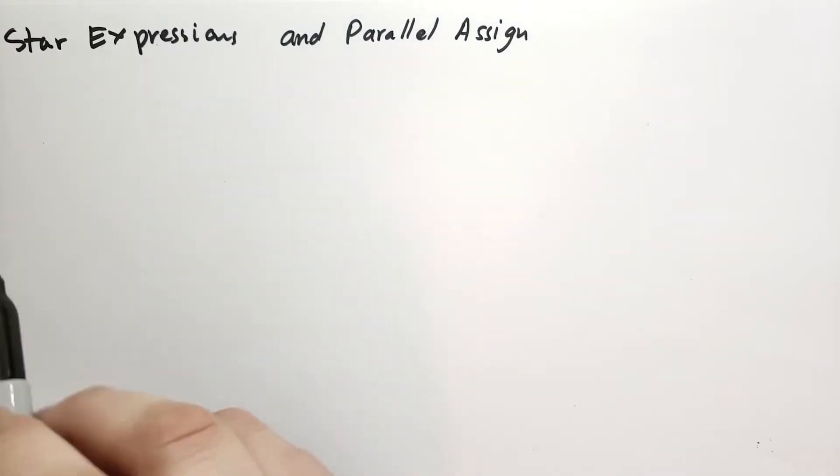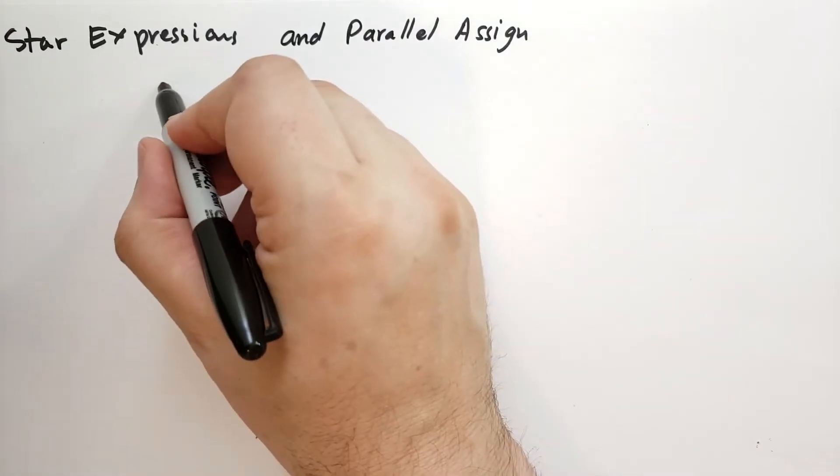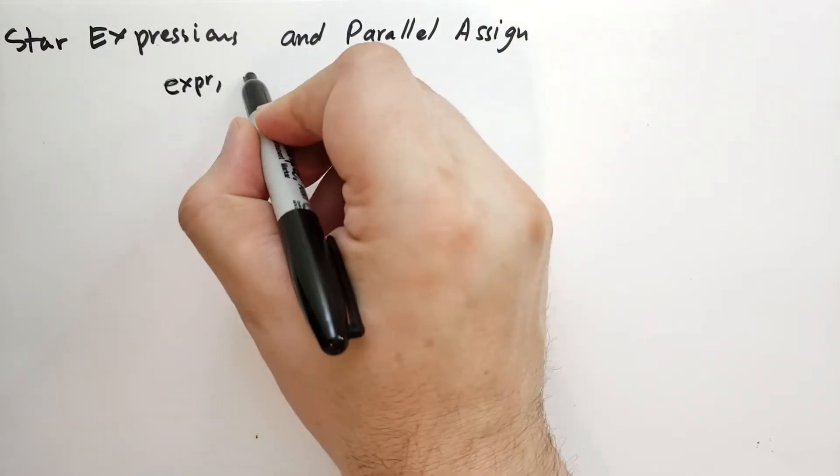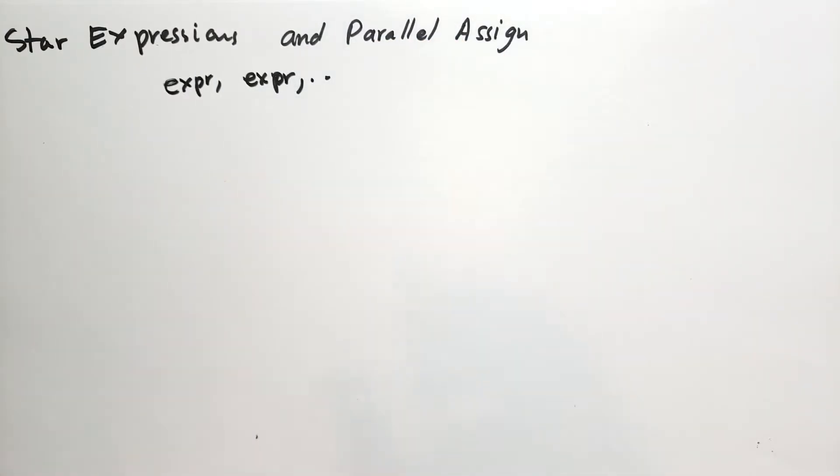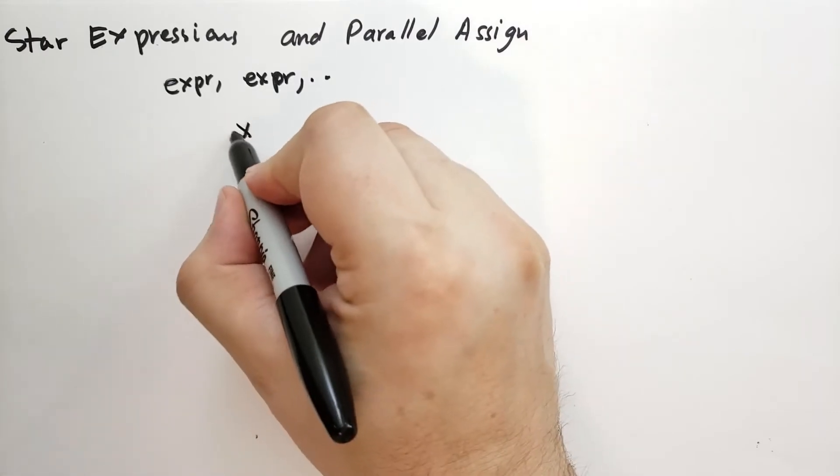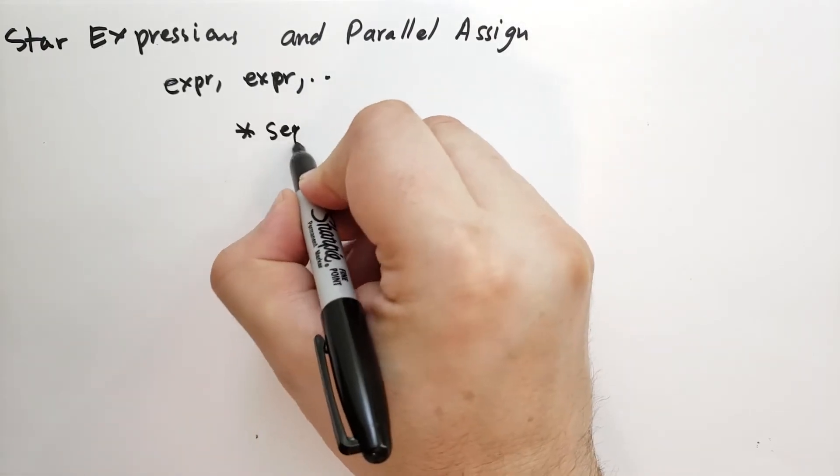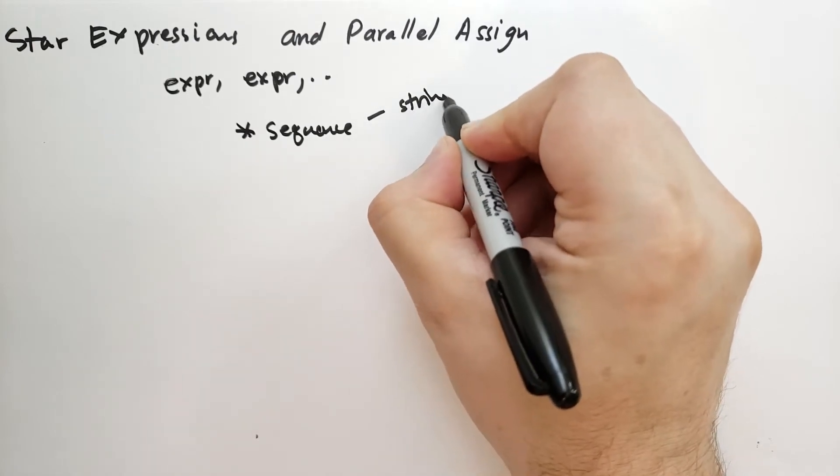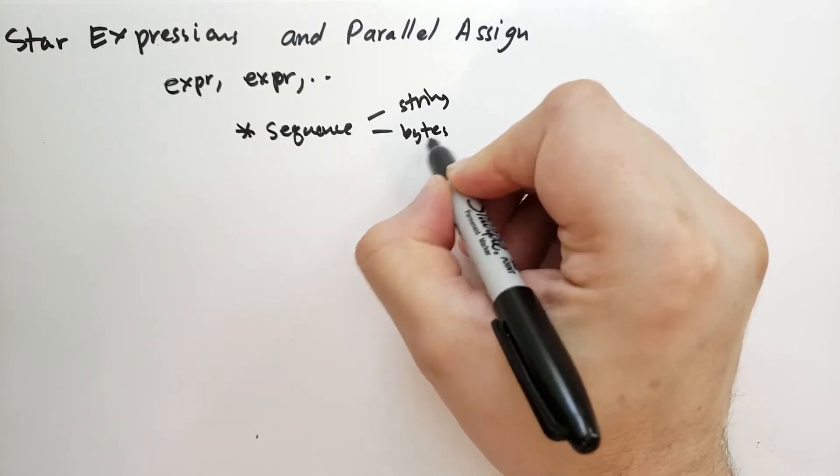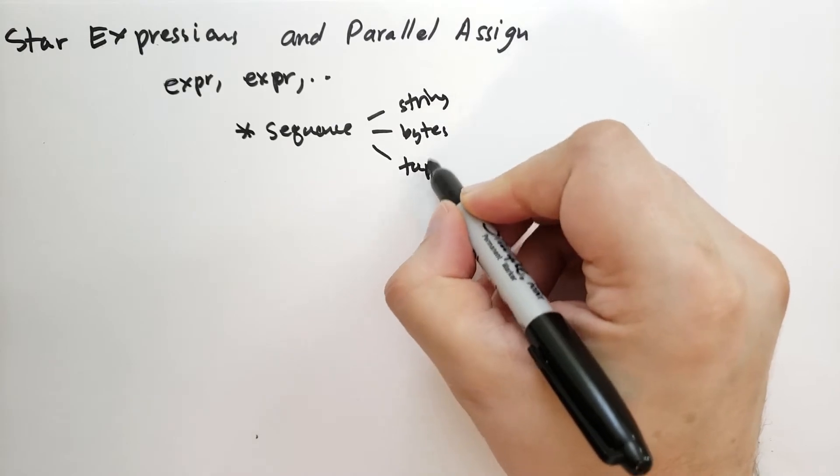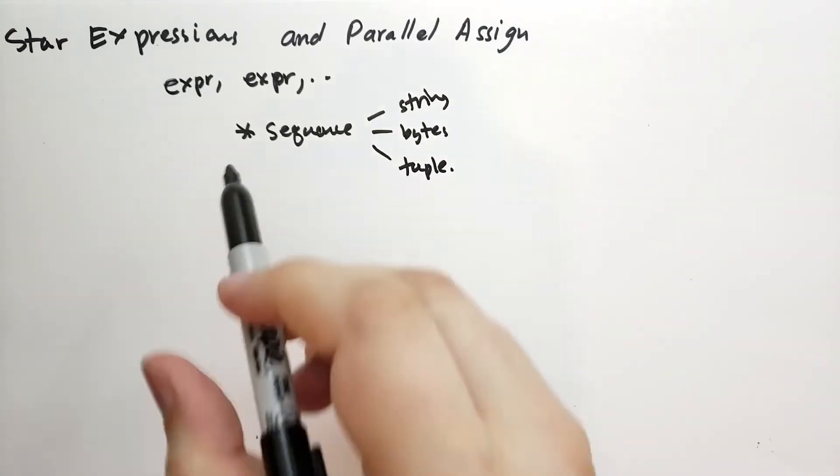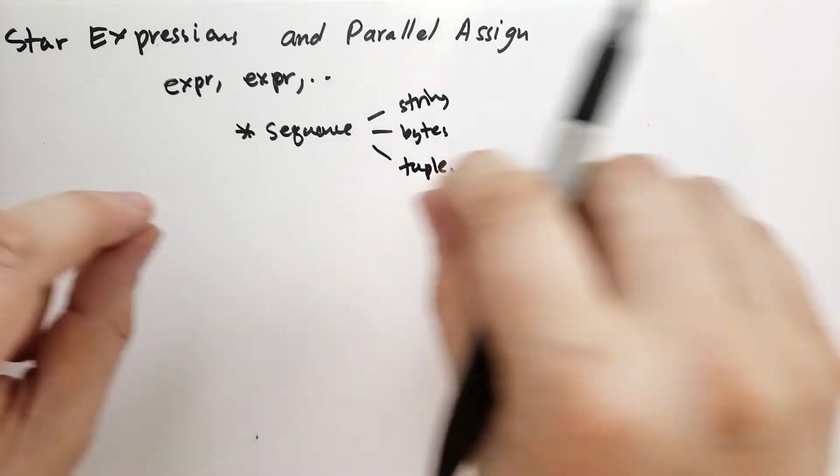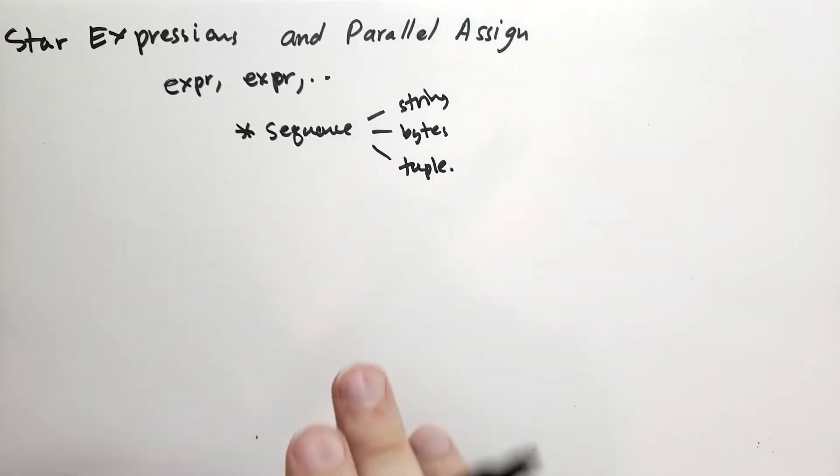Anytime you have a list expression, so anytime you have expression followed by another expression and so on and so forth, you can always include star and then some sequence. And the sequence could be a string, it could be bytes, or it could be a tuple.